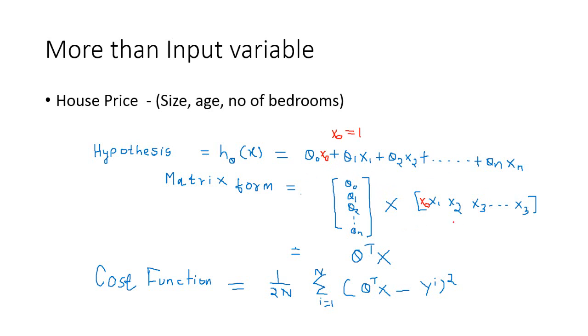So that's how the matrix form looks like. This is a 1 cross n matrix. And the other matrix is an n cross 1 matrix. And for multiplication, these two should be same. The second term should be equal to the first term. And it's the same here. N here and n here. So we can represent in that form.